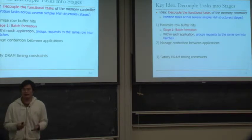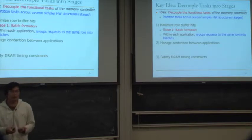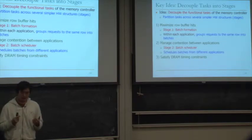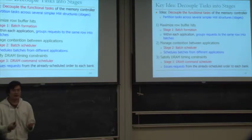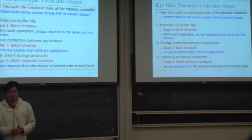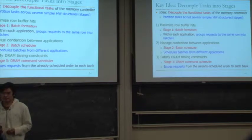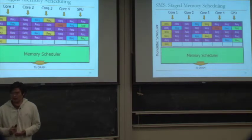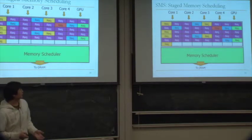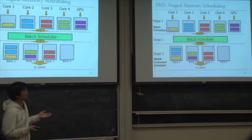We propose Stage 1, called batch formation, which groups requests to the same row into batches within each application. When a batch is formed, it is considered by Stage 2, the batch scheduler, which schedules batches from different applications. When a batch is scheduled, it is sent to the last stage, the DRAM scheduler, which issues requests from the already-scheduled order to each bank.